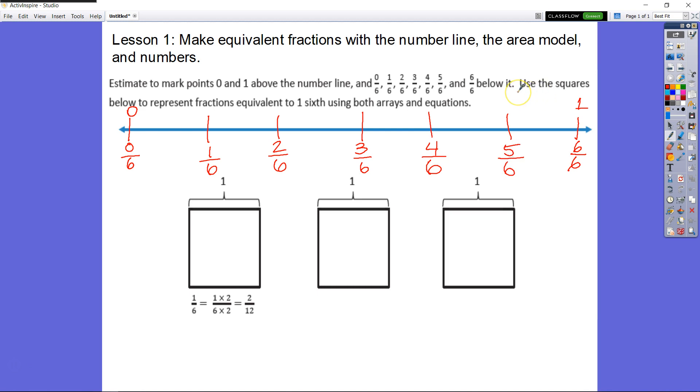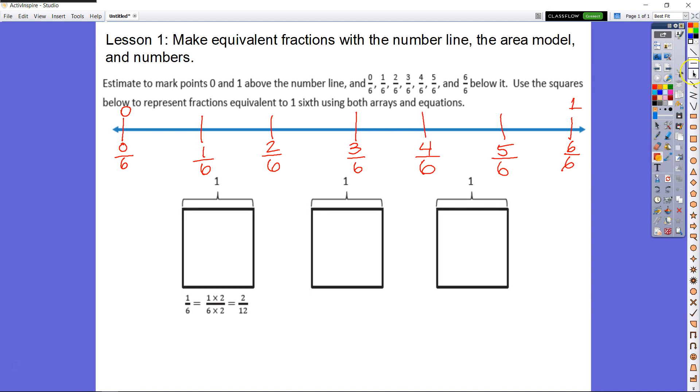All right, so now we're going to use the squares below to represent the fraction equal to 1/6. Let's turn on our vertical line here. To split it into 6, we need 5 lines. That's going to be 1 in the middle and 2 on each side, on each half rather. Same thing here, 1 in the middle and 2 on each half, 1 in the middle, 2 on each half.